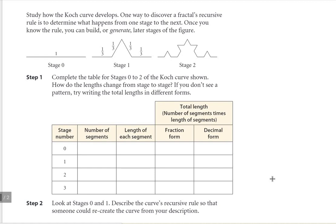We're taking a look at the Koch curve now. You should have just watched a video about this Koch curve and learned that this is another example of a fractal design. In the video they created a whole snowflake-type figure. We're just going to look at just one side of that snowflake, and we're going to use fractions and exponents to help describe the length of each side of this Koch curve.